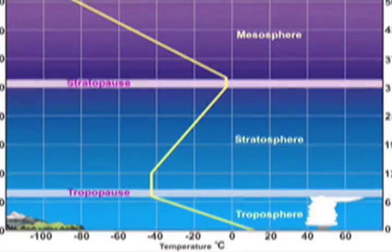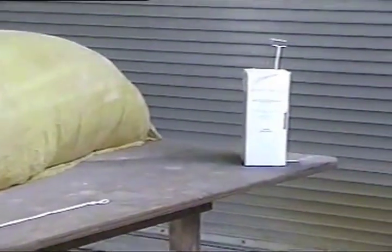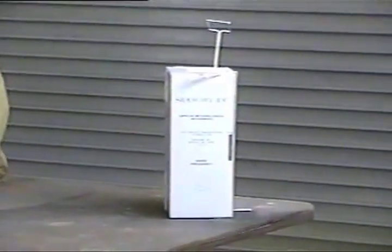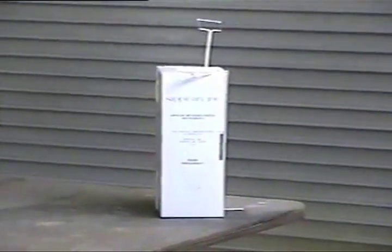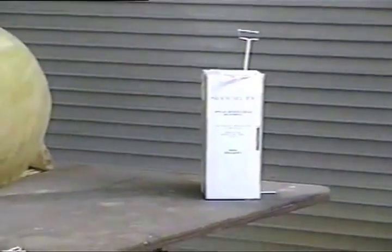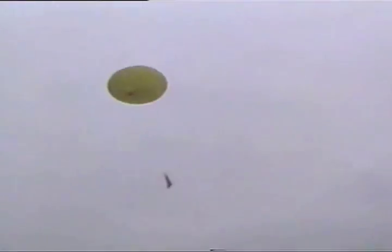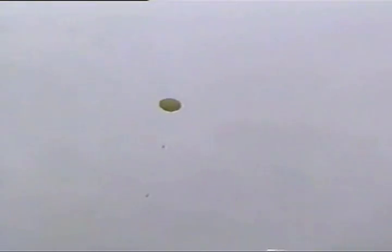A radiosonde is a small box that contains weather instruments. To measure the atmosphere, a gas-filled balloon is tied to it. As the radiosonde ascends, it measures the vertical profile, including the temperature.